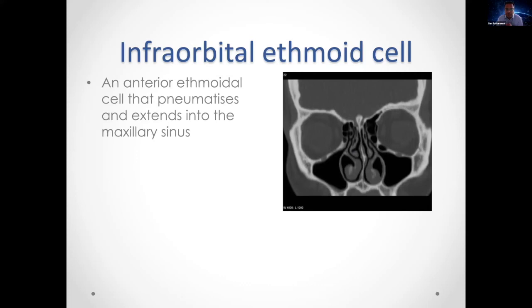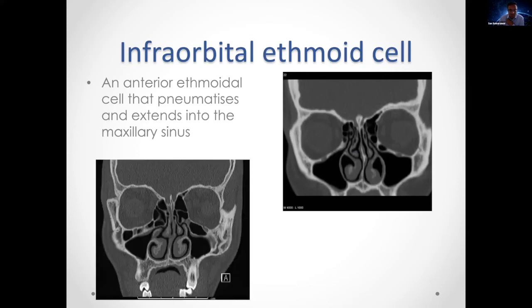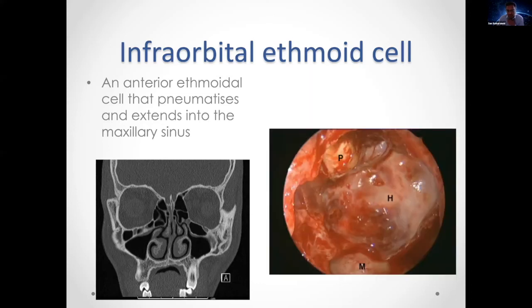We've moved away from eponymous terms: the infraorbital ethmoid cell (formerly called a Haller cell) is an anterior ethmoid cell that pneumatizes along the floor of the orbit and extends into the maxillary sinus. This can be extensive — some cells occupy more than 50% of the sinus. Intraoperatively, you could easily mistake this for the maxillary sinus itself, when in fact the maxillary sinus is inferior to it.